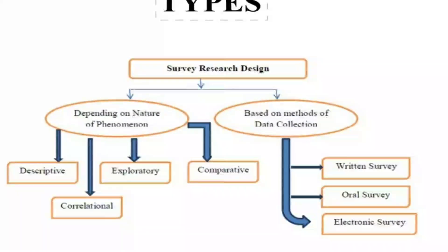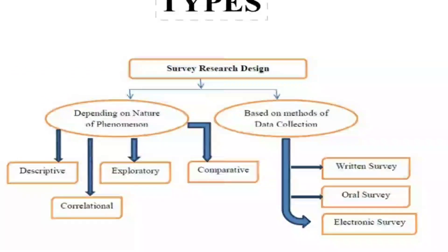Types of survey research design: depending on the nature of the phenomenon under study, you have descriptive, correlational, exploratory, and comparative surveys. Based on the method of data collection, you have written survey, oral survey, and electronic survey. Electronic surveys are newer — nowadays links are sent through electronic media, and respondents accept or decline through email, web Google forms, or SMS.